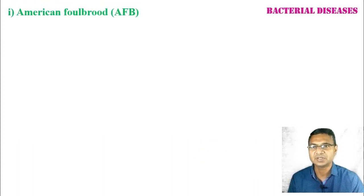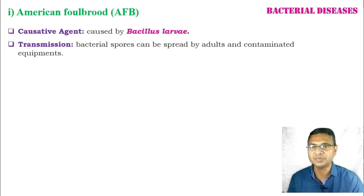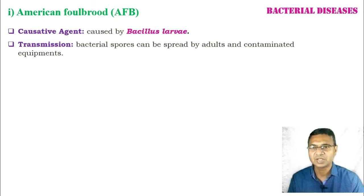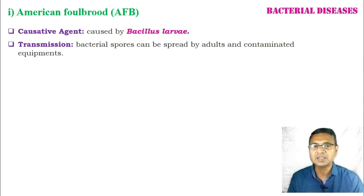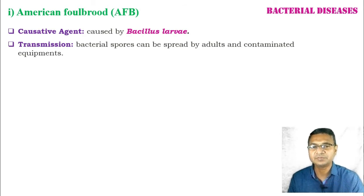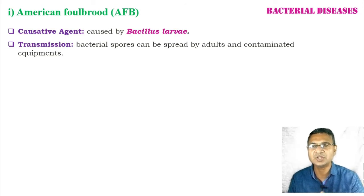The first bacterial disease is American Foulbrood (AFB), caused by the bacteria Bacillus larvae. The bacterial spores are transmitted in the colony by the adult bees, especially those bees that clean the colony and transport food material from one cell to another through the developmental stages — duties performed by the nurse bees. These spores also spread by contamination of equipment during monitoring by beekeepers.